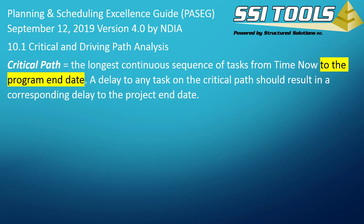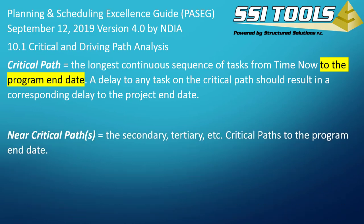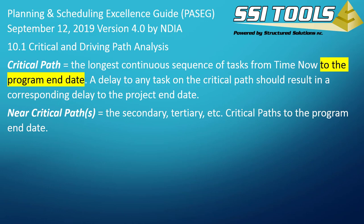Tasks with some schedule flexibility are known as near-critical paths. You may have heard of these as secondary or tertiary critical path. There is no official definition of the parameters defining secondary and tertiary critical paths. You might define tasks that can be delayed by one week as secondary and tasks with two weeks of schedule flexibility as tertiary.